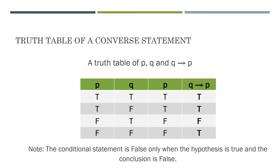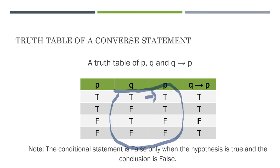For the converse statement, we have to fill out the table for P, Q, and then if Q then P. I have written P at the right of Q so I can focus on this portion of my table. If we have two true statements, then that is true. If your hypothesis is false and the conclusion is true, then that is true. If my hypothesis is true and my conclusion is false, then I get a false. If both statements are false, then I have true. Your conditional statement is only false if and only if the hypothesis is true and the conclusion is false.